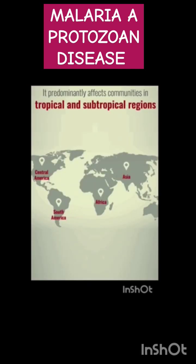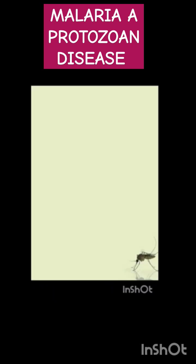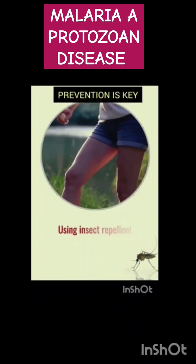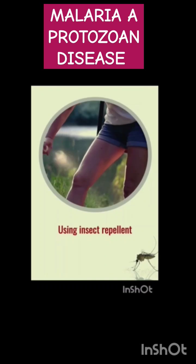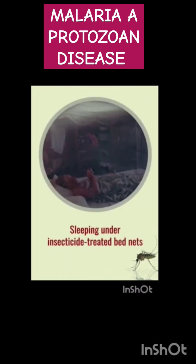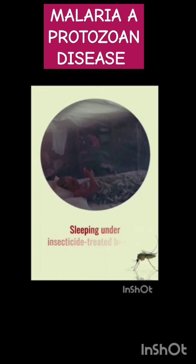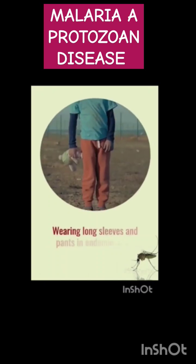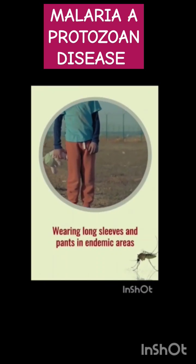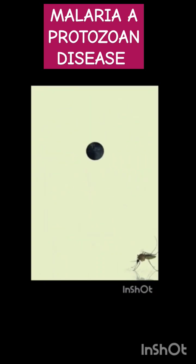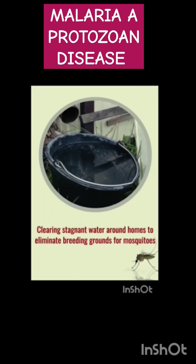Various preventive measures are important to control malaria. First, using insect repellents. Second, sleeping under insecticide-treated bed nets. Third, wearing long sleeves and pants in endemic areas. And fourth, clearing stagnant water around homes to eliminate breeding grounds for mosquitoes.